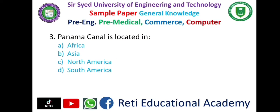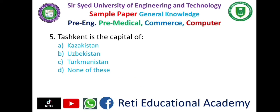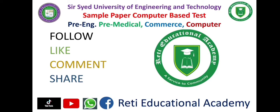Question 3: Panama Canal is located in — A. Africa, B. Asia, C. North America, D. South America — and the correct answer is C. North America. Question 4: The Gurkhas are the original inhabitants of which country? — A. Nepal, B. Tibet, C. China, D. India — and the correct answer is A. Nepal. Question 5: Tashkent is the capital of — A. Kazakhstan, B. Uzbekistan, C. Turkmenistan, D. None of these — and the correct answer is B. Uzbekistan.